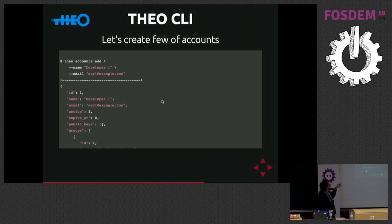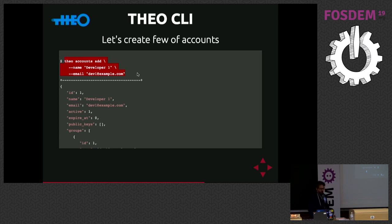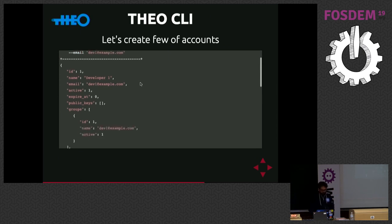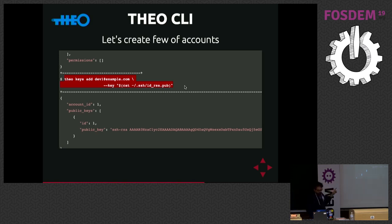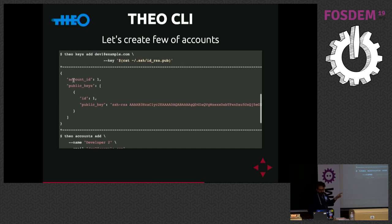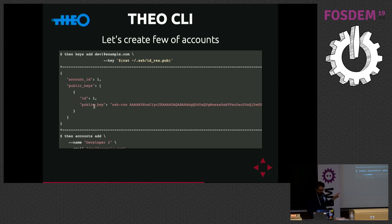The first thing to do using Theo CLI is to create a new account — we just need to add a name and an email, and the email must of course be unique. After that, we can add the public key. In this case I will use my own public key from my own directory. As you can see from the output, the first account we created is assigned this public key.